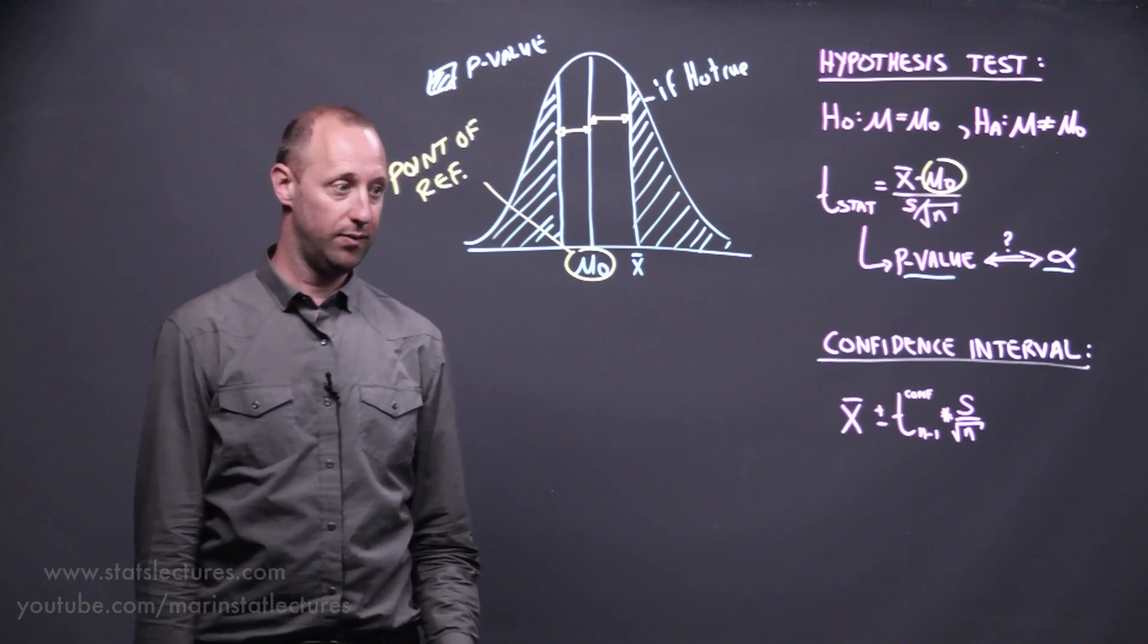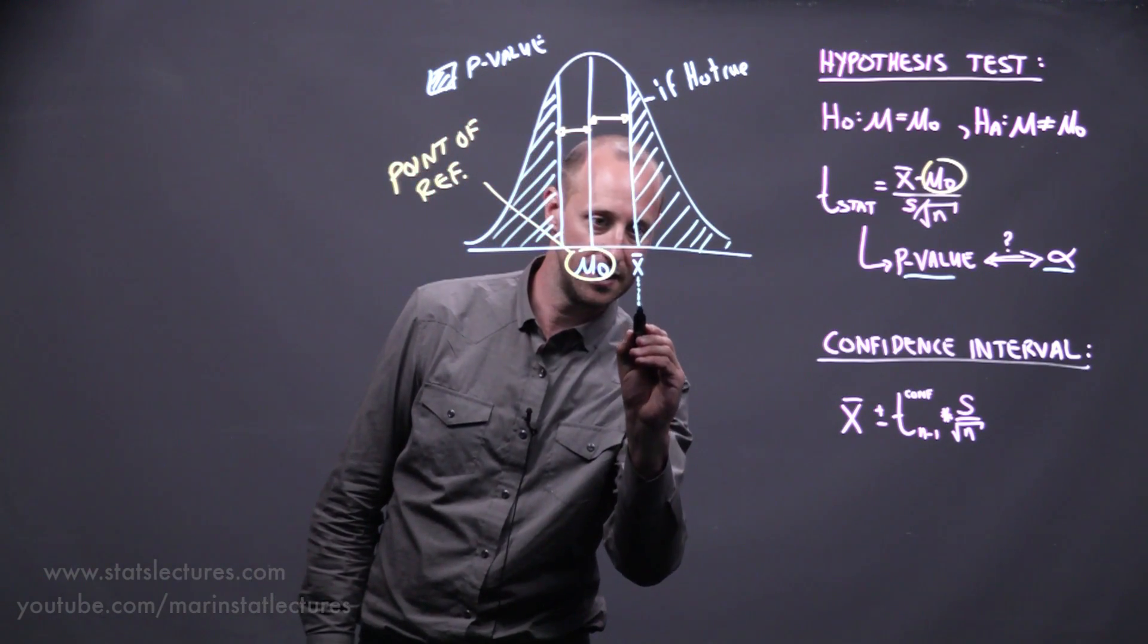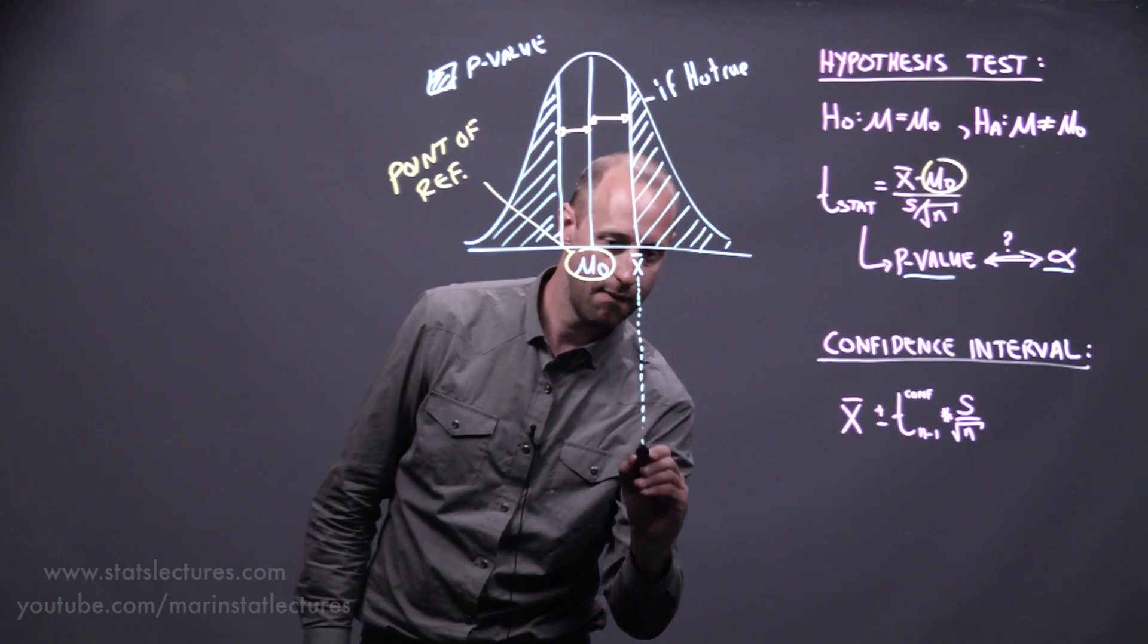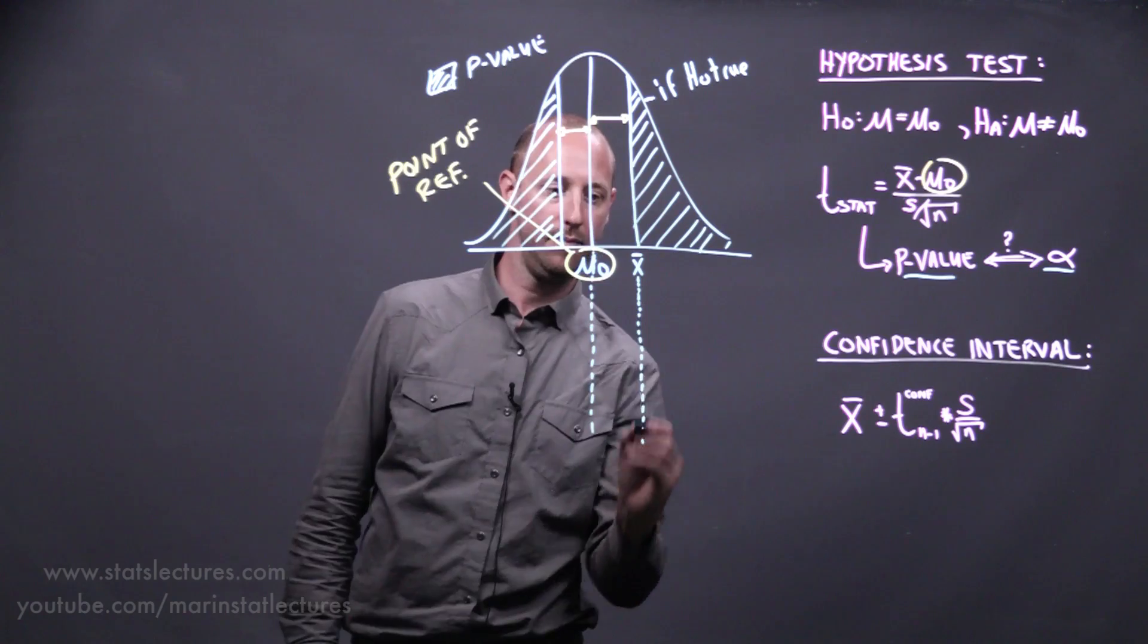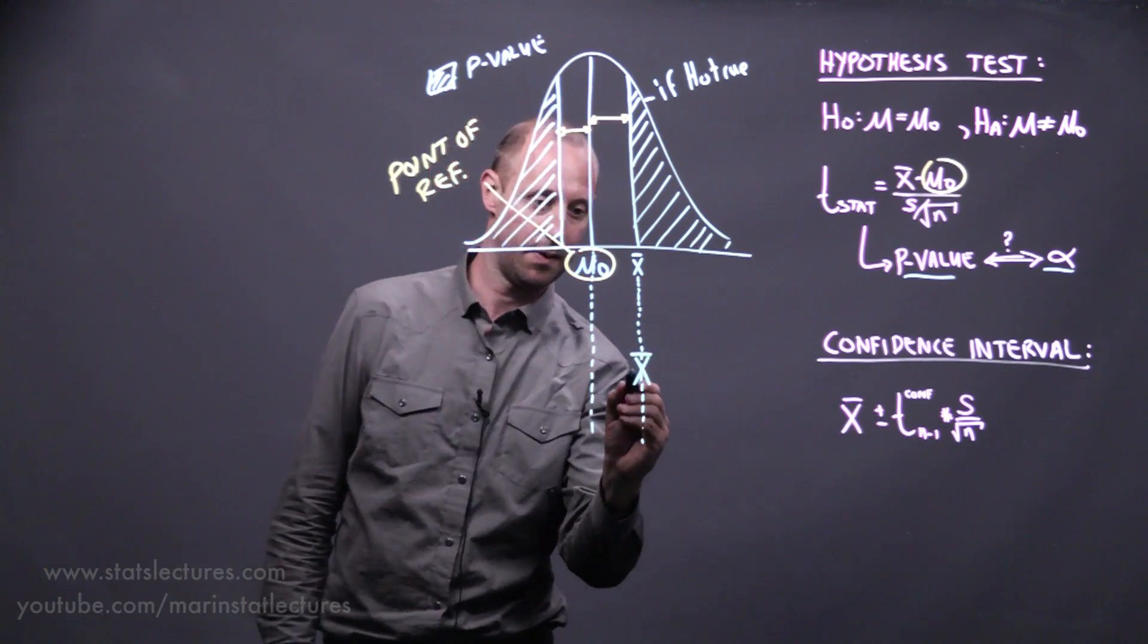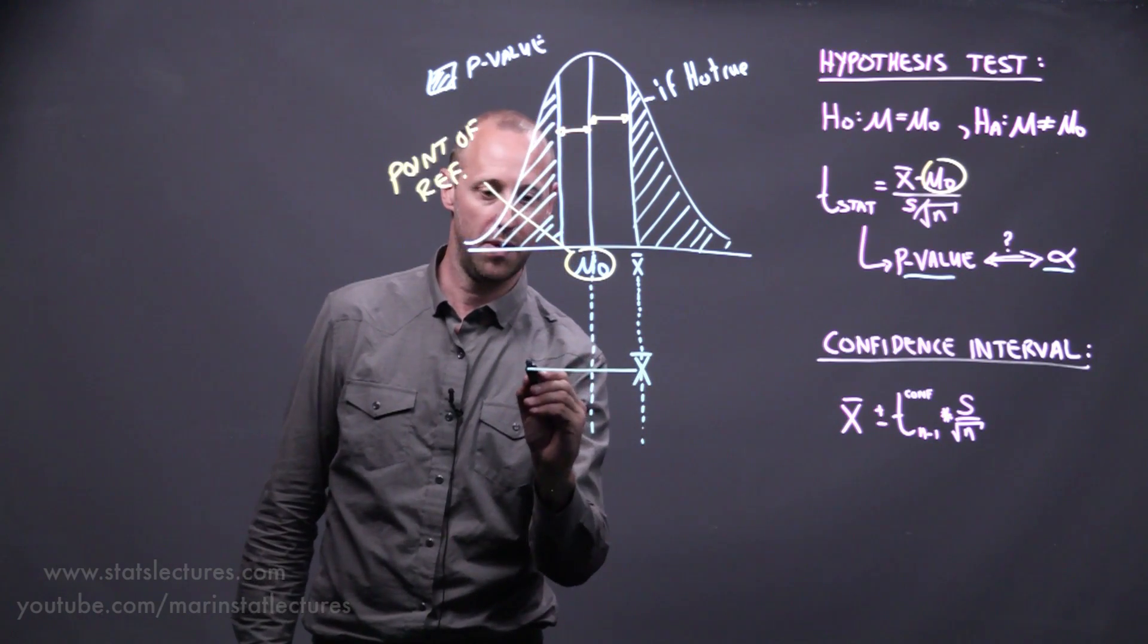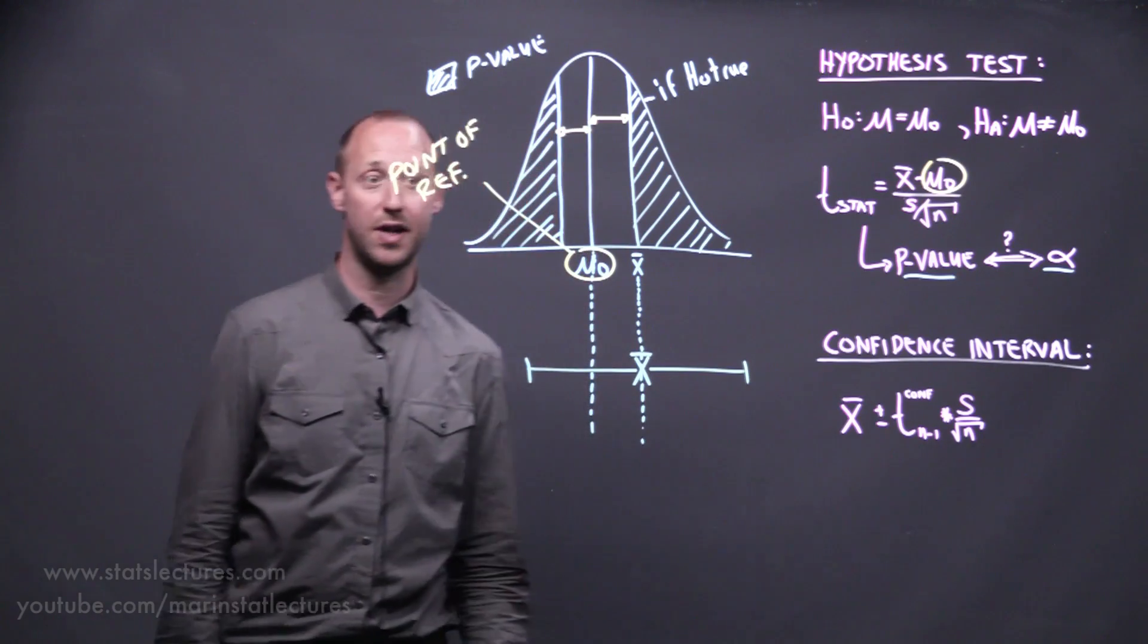When looking at a confidence interval, what we do is extend these downward. We go from our estimate and we tack on a margin of error—minus roughly two standard errors, plus roughly two standard errors.